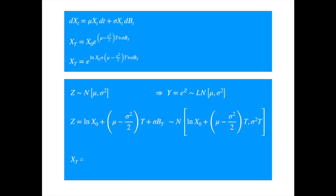Thus our solution, being an exponential of a normal, is log-normally distributed with the same mean and variance. Notice the mean and variance here are the mean and variance of the expression in the exponent, and not of x. This is the standard terminology for the log-normal distribution, though it does sound confusing in the beginning. The mean and variance of x are different, and we are going to derive them now.